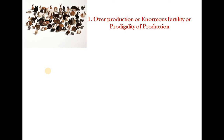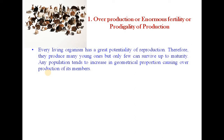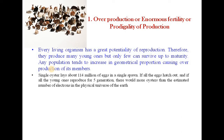The first principle is overproduction or enormous fertility. Every living organism has a great potentiality of reproduction, so they produce many young ones but only few can survive up to maturity. Any population tends to increase in geometrical proportion causing overproduction of its members. A single oyster lays about 14 million eggs in a single span. If all the eggs hatched and the young ones reproduced for 5 generations, there would be more oysters than the estimated number of electrons in the physical universe.